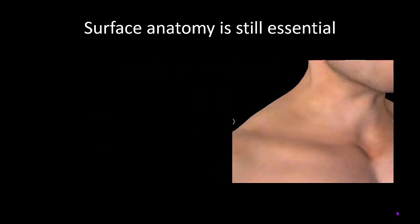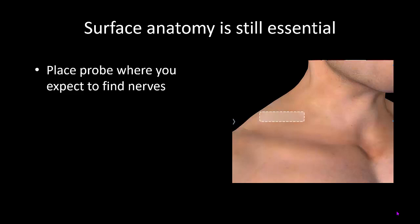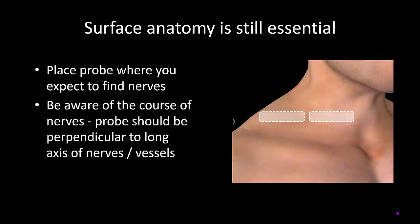Surface anatomy used to be the cornerstone of landmark guided regional anesthesia, but remains equally important in ultrasound guided regional anesthesia. You should be placing your probe where you expect to find the nerves you are looking for, and you should be aware of the course of these nerves, as in general you want to place the probe perpendicular to the long axis of these nerves. If you don't consistently do this, you will have difficulty with pattern recognition.